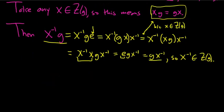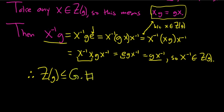We've shown it's not empty, closed under the group operation, and closed under inverses. Therefore, the centralizer of an element is a subgroup of G. That completes the proof. I hope this video has been helpful.